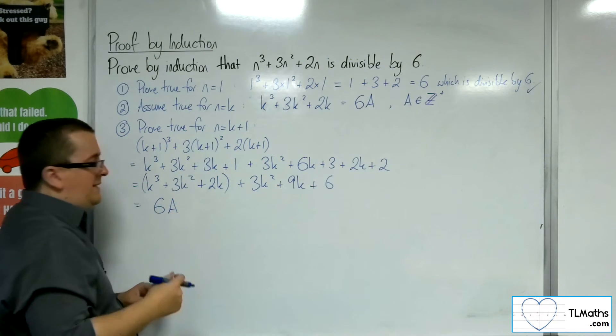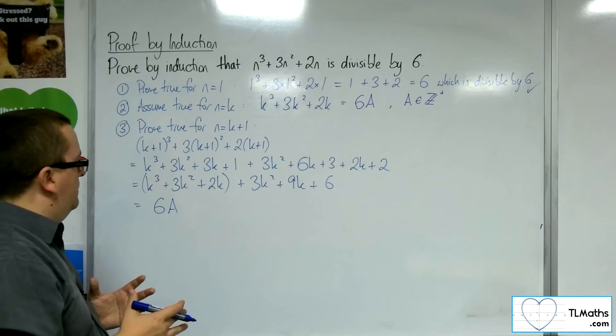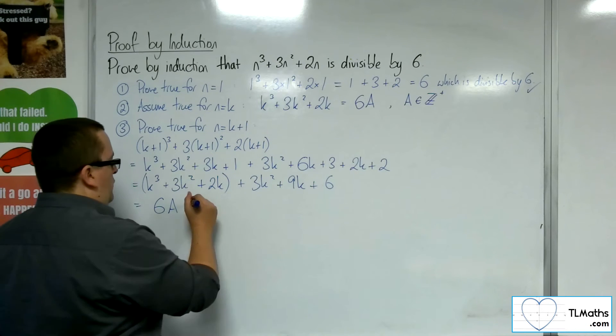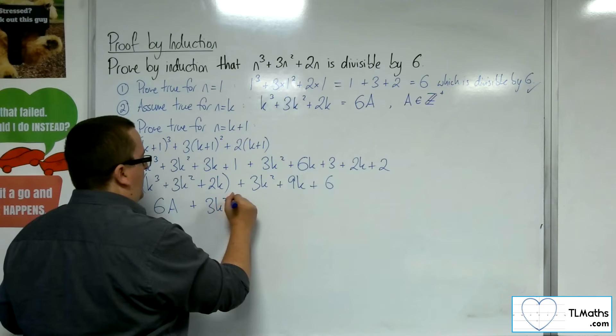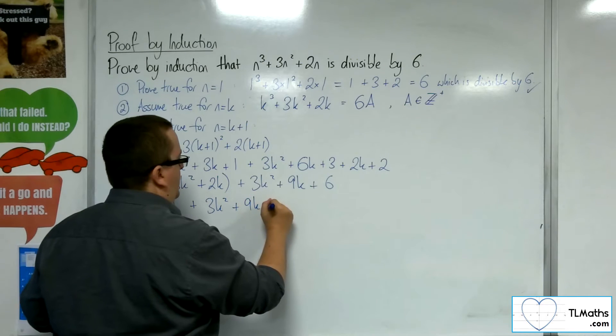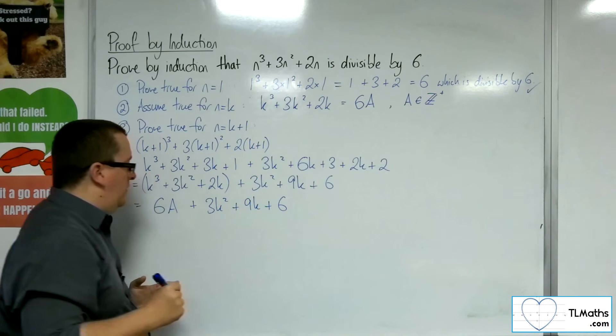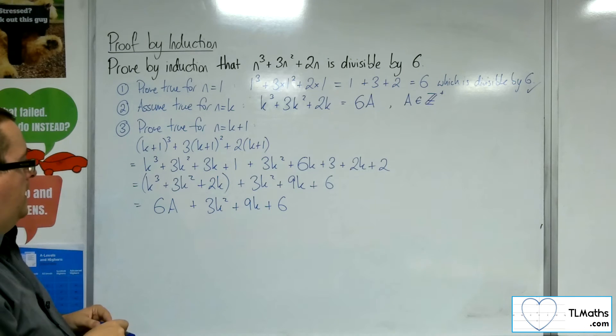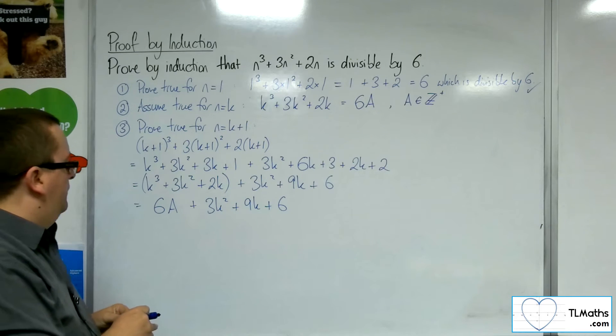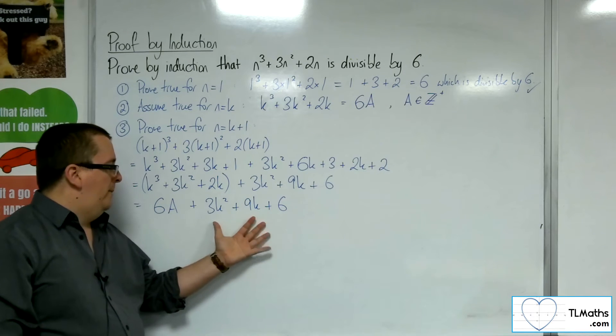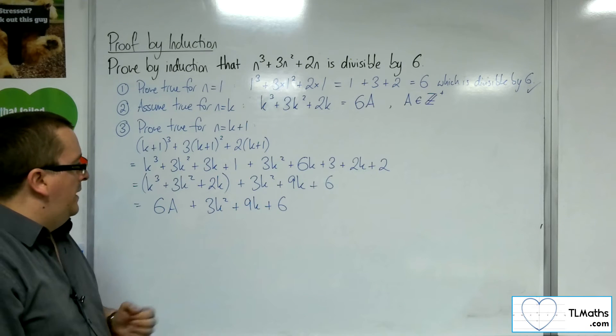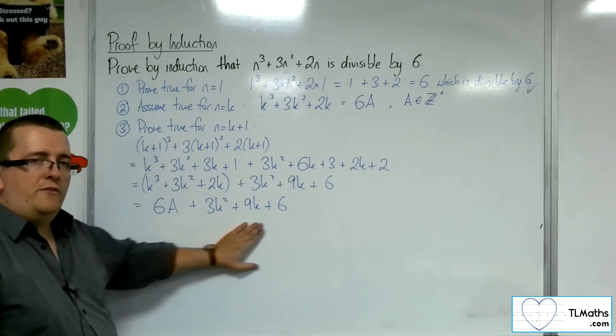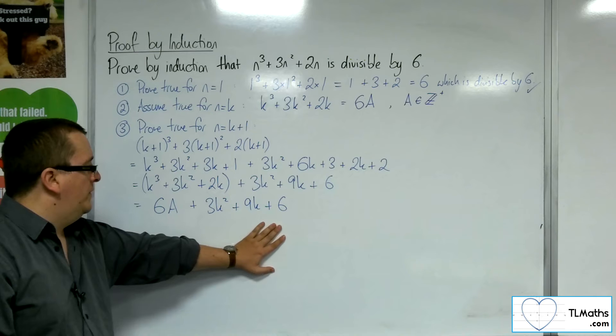And what I've got left is this 3k squared plus 9k plus 6. Right. So, how am I going to deal with that? Because there's no common factor there. I can't bring the 6 out.